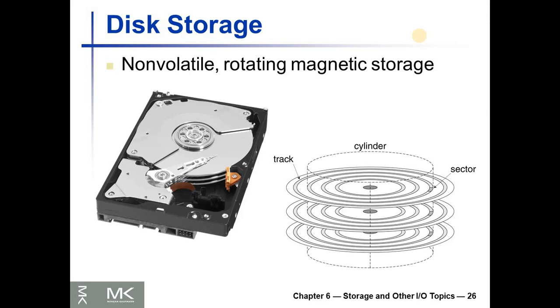They are made out of rotating magnetic storage. This is an example hard disk. Its cover is removed so that we can see what's inside. We see here that there are three disks. These three disks rotate.